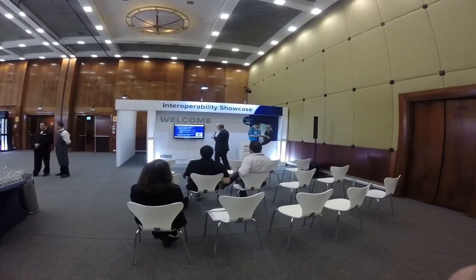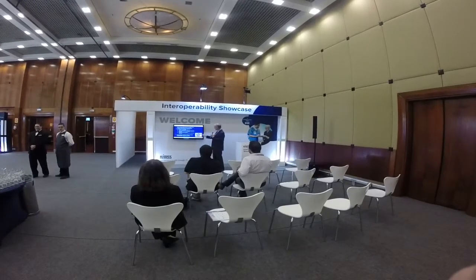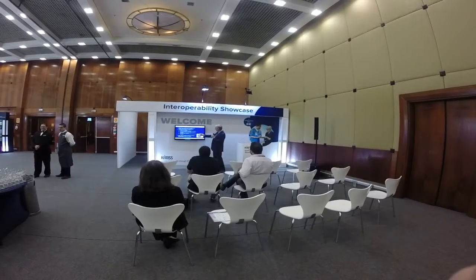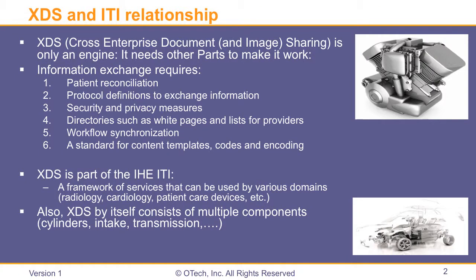Number five, we need to synchronize the workflow. When we send information, we need to tell the receiver what we expect them to do — for example, a second read or adding it to an electronic medical record. And then, number six, we also need a standard for content templates, codes, and encoding, so that when we exchange the information, it can be automatically decoded and incorporated into the electronic health record.